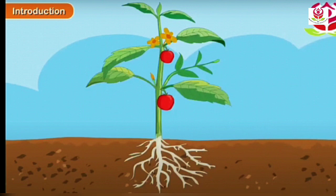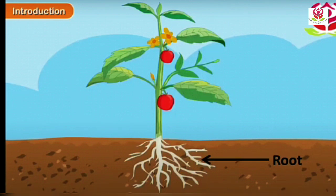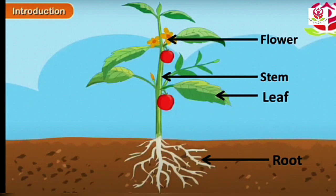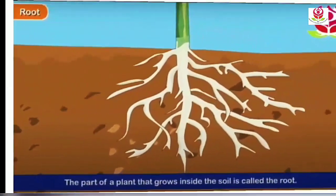Here it shows a picture of the parts of the plant. So today we are going to learn about parts of the plant and their functions. The parts of a plant are: root, stem, leaf, flower, and fruit. Now let's learn one by one, beginning with root.